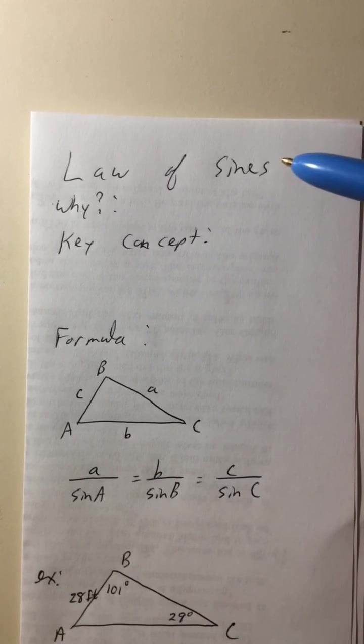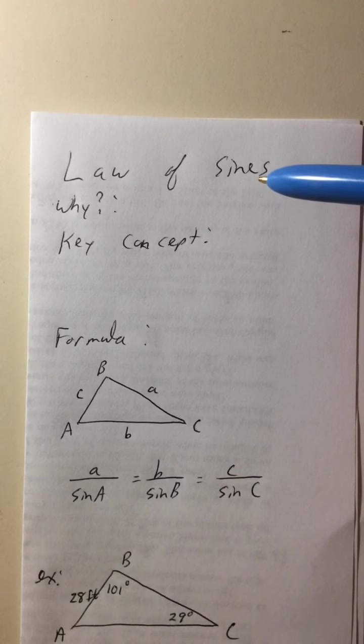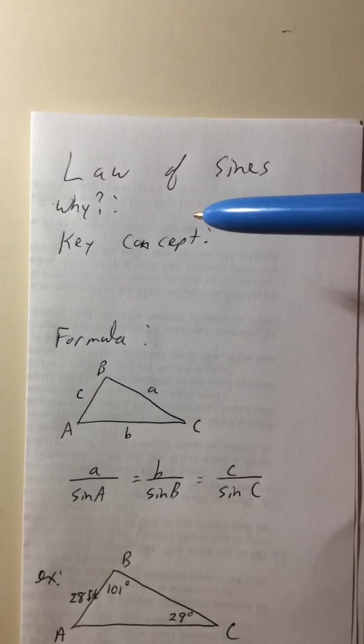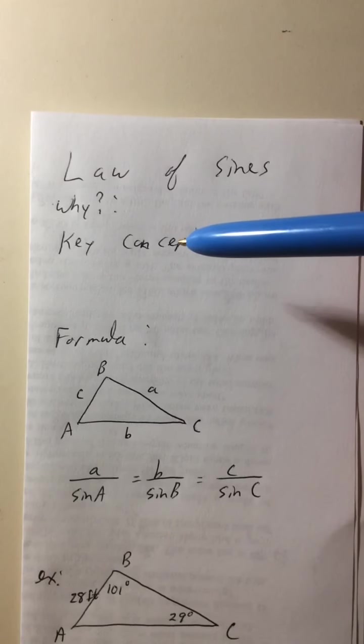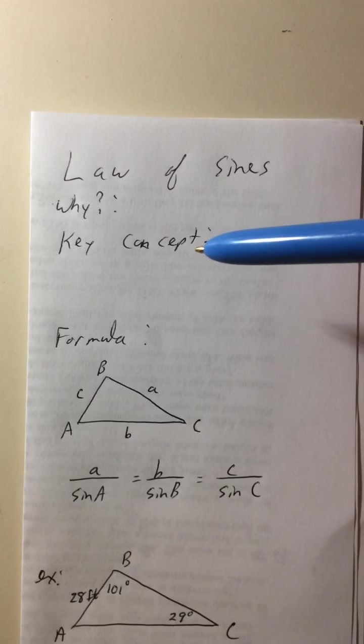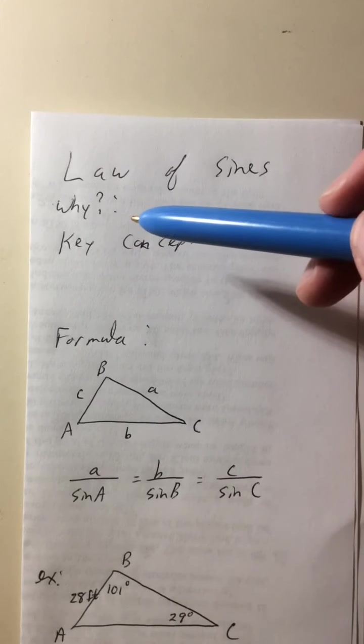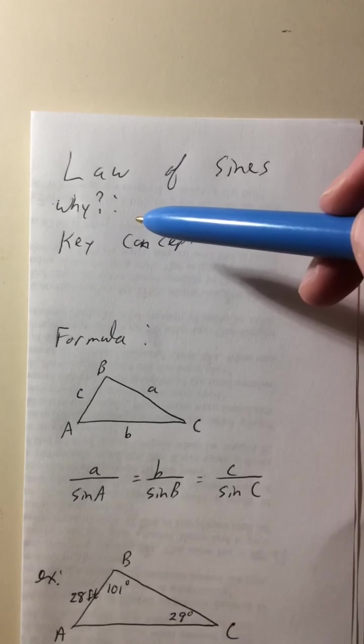So anyway, let's jump right in. So we've got law of sines. So why is it that we have the law of sines? Well, we've been so far able to solve our triangles just as long as they're right triangles. If it's a right triangle, we can use simple right triangle trig, and we can find all the missing pieces, all the angles, all the sides. But let's face it, a lot of triangles are not right triangles.